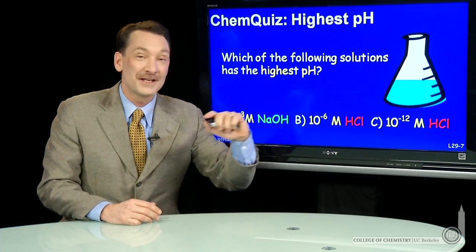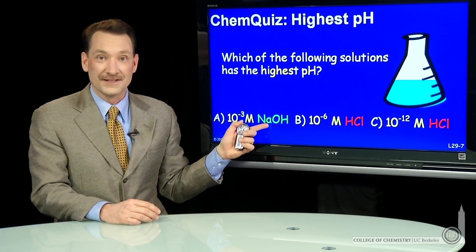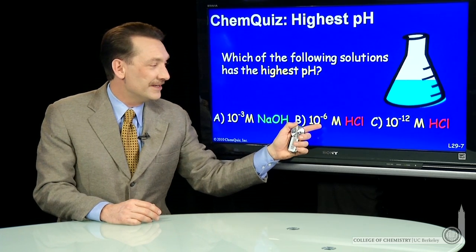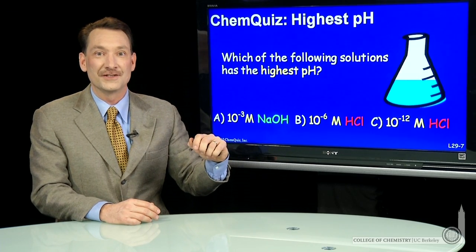And 10 to the minus 12 molar HCl. So these are concentrations of strong bases, NaOH, completely dissociates, and strong acids, HCl, completely dissociates.